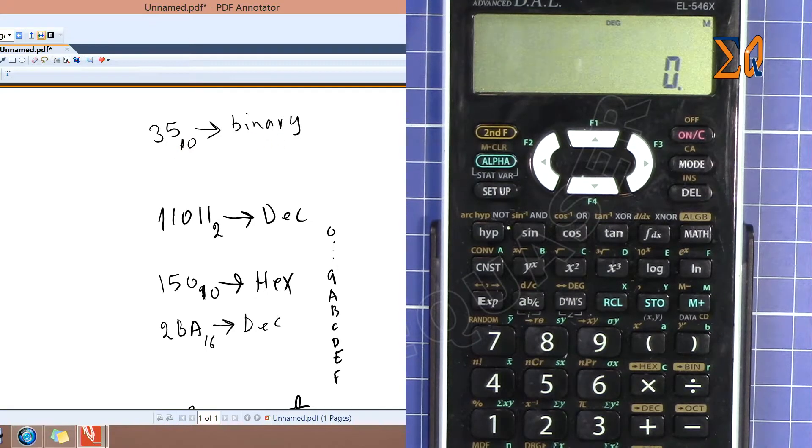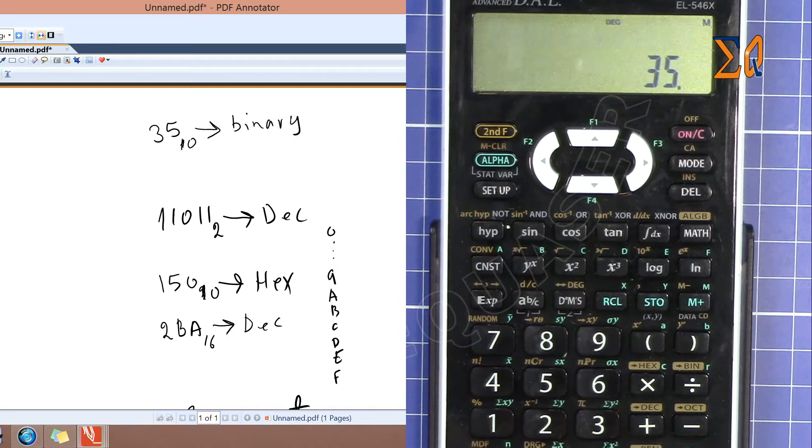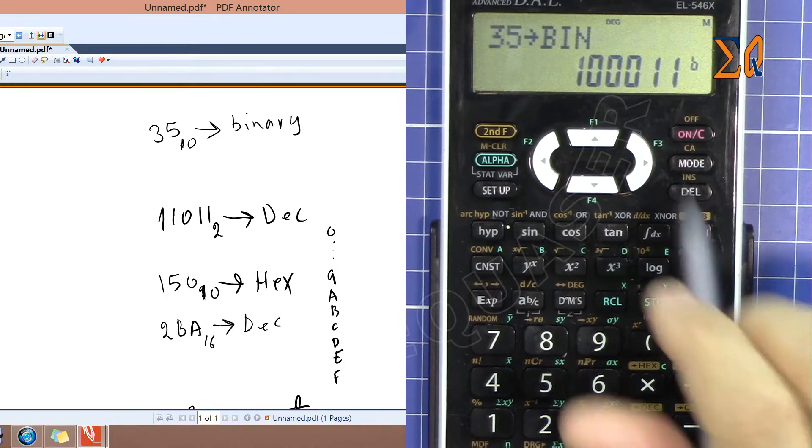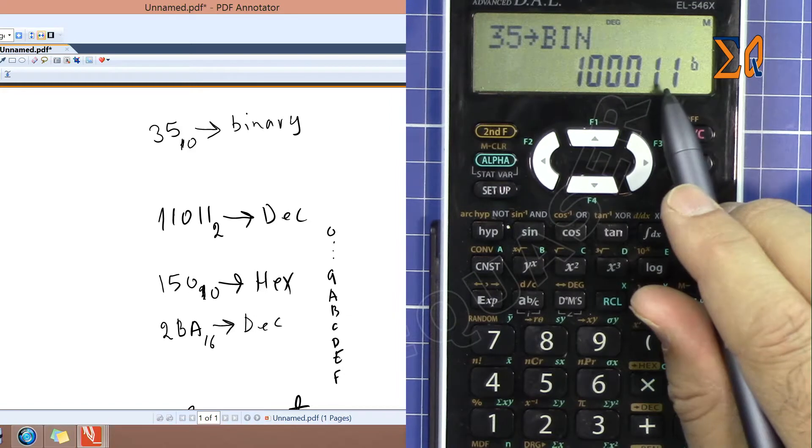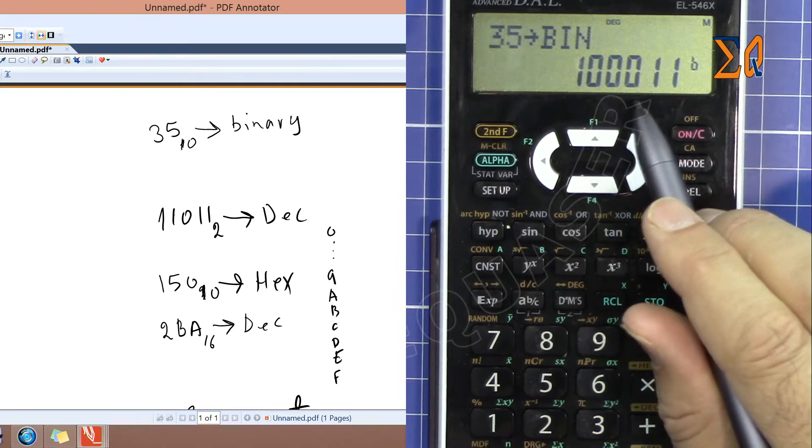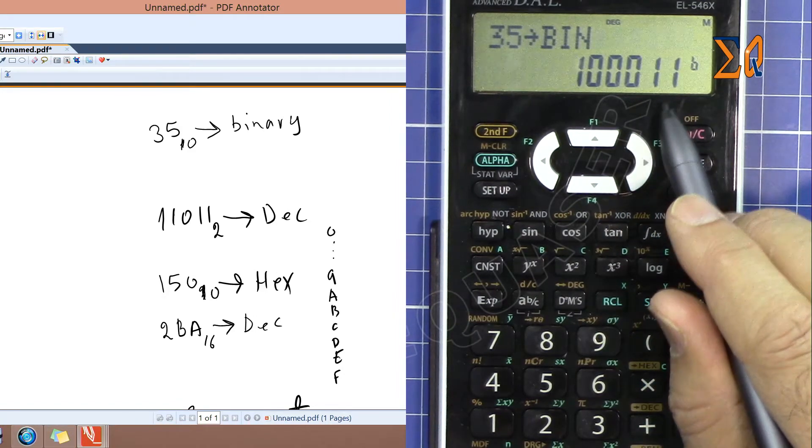Enter 35. To convert it to binary, just press second function and then equal sign. Now we are getting binary, so that's one zero zero zero one one.